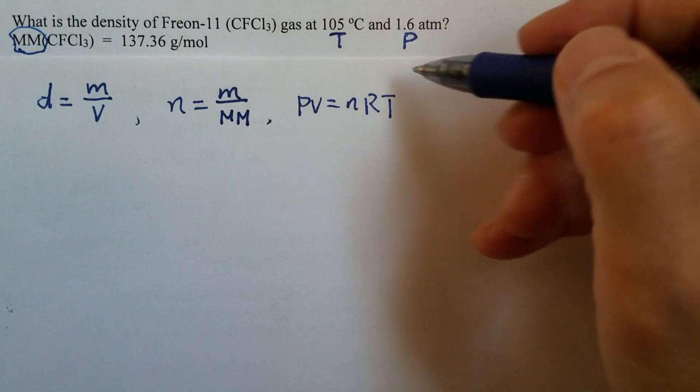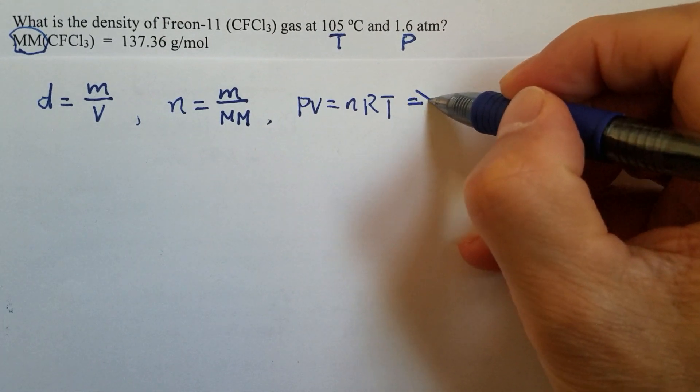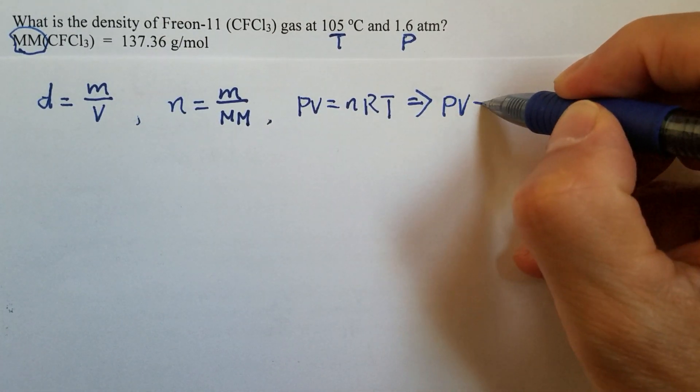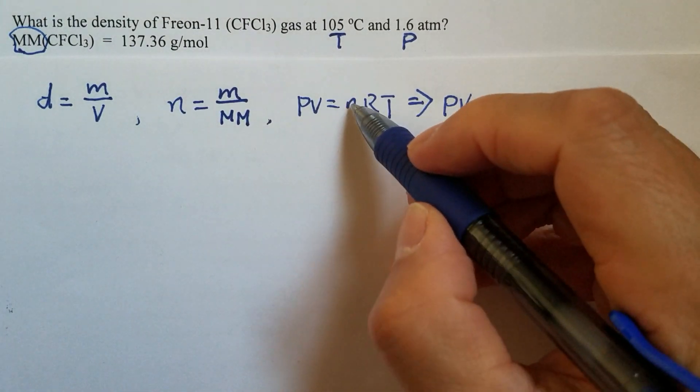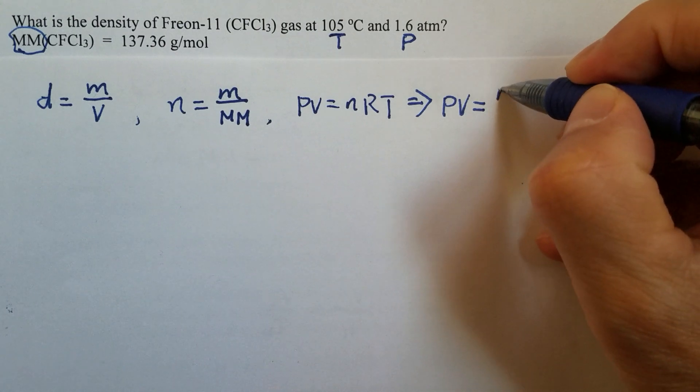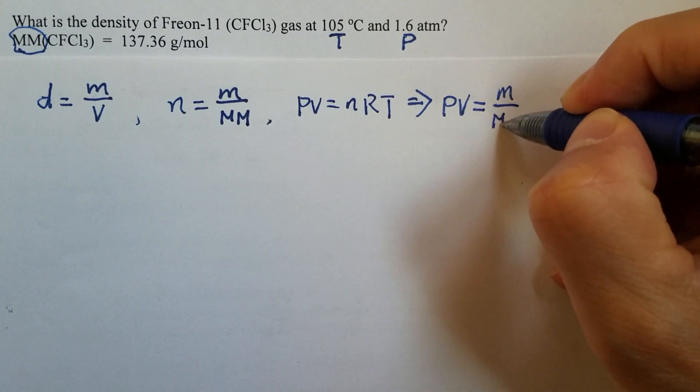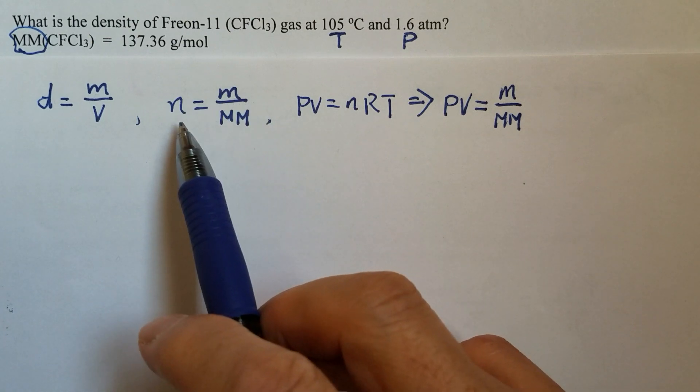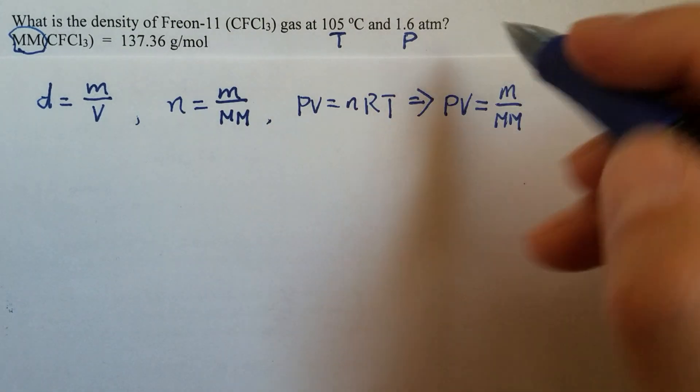Okay, now then we should be able to rewrite this ideal gas law equation: PV equals, instead of writing down n, we simply write down m over molar mass, because that equals n, the number of moles.